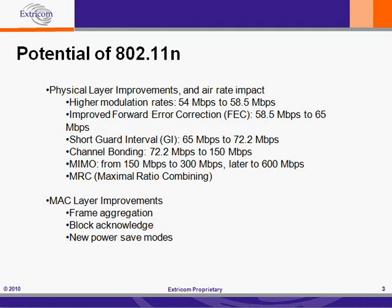The features that make up 802.11n can basically be divided into physical layer improvements and MAC layer improvements. The first physical layer improvement that 802.11n brings to the table is higher modulation rates, which raises the maximum error rate from the 54 Mbps maximum of 802.11a and 802.11g to 58.5 Mbps.